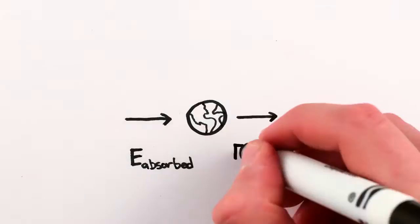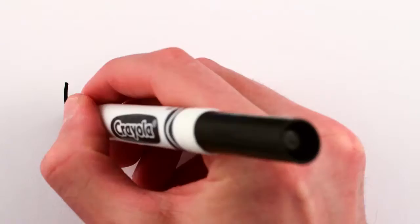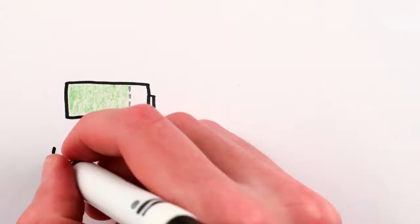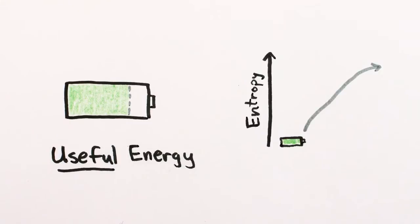So if energy in equals energy out, how can we possibly be using any energy to do anything? What matters, it turns out, isn't simply energy, it's useful energy. And energy is useful when it comes packaged in a low-entropy form.